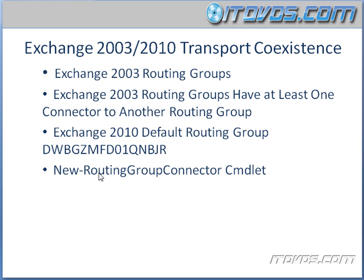This will not only help the efficiency of email routing, but it also gives us some redundancy. One thing to note before we go to install Exchange 2010: we want to make sure that all of our Exchange 2003 routing groups have at least one connector to another routing group. Most likely we're going to have this — otherwise email routing wouldn't work properly with our Exchange 2003 servers — but we do want to double-check that we have this.